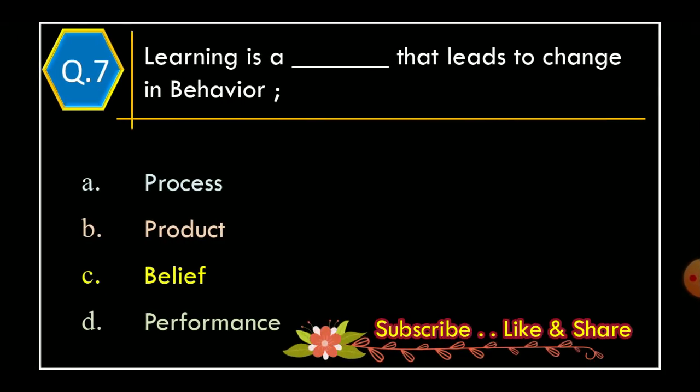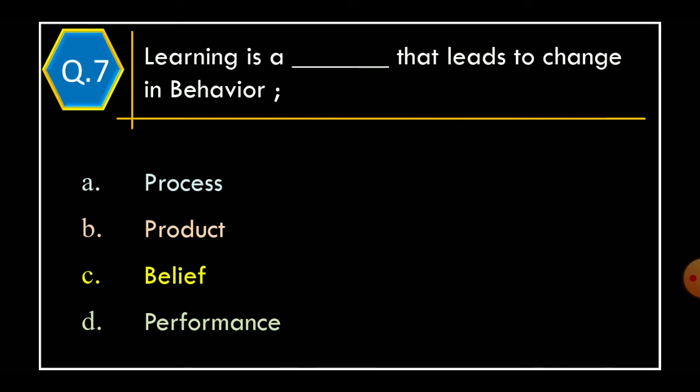Question 7: Learning is a _____ that leads to change in behavior. Option A: Process. Option B: Product. Option C: Belief. Option D: Performance. The correct option is Option A, Process.